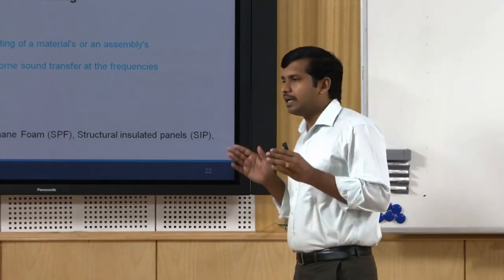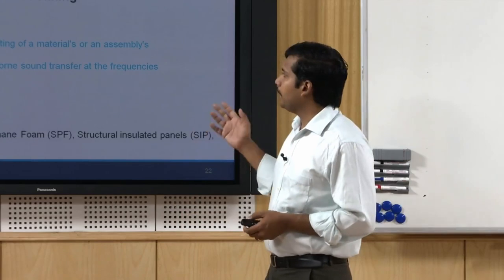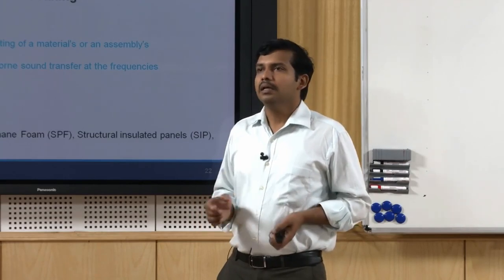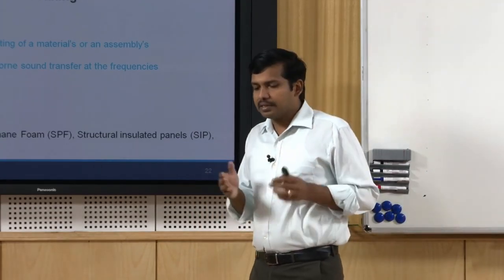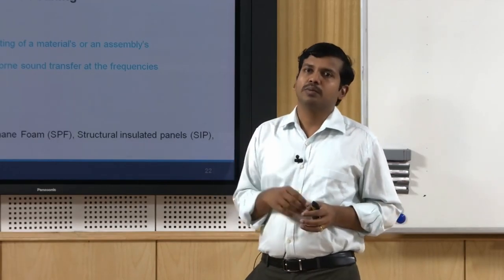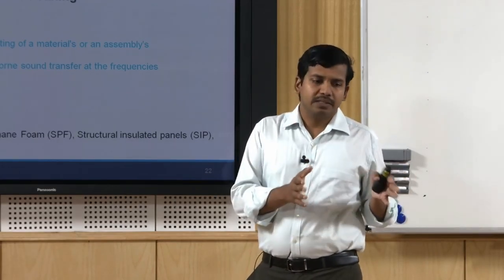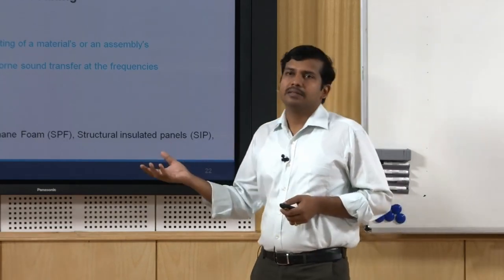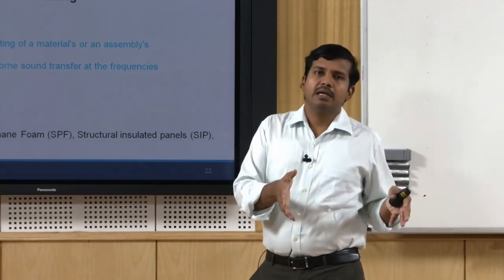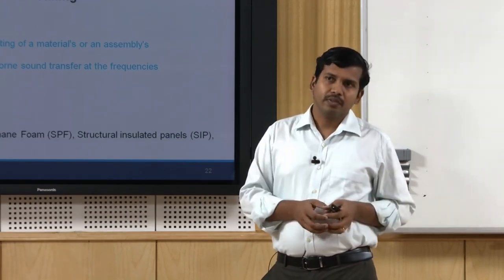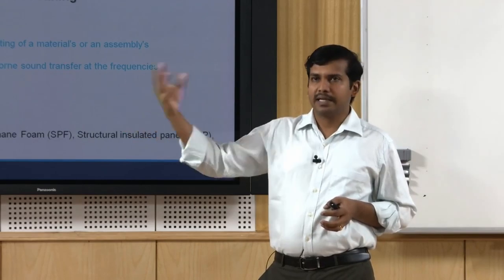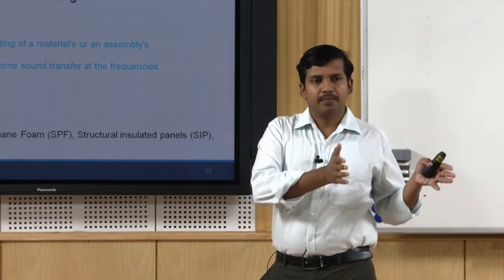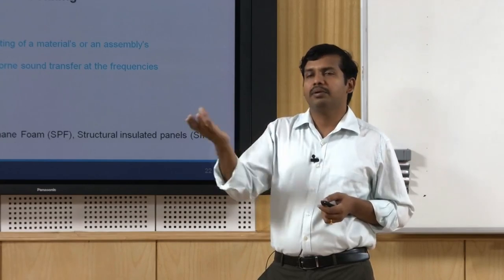For any particular material — a door, a window, or a wall system — there is a standard which asks you to go for a specific STC rating: say 35, 40, or 50. For example, if you are designing a boardroom next to an open plan office, the STC rating of the partition between these two should be, say, 45. If the boardroom requires around 30 to 35 dB background noise, and the open office produces 80 dB, a 50 dB reduction is required, so the sound transmission class must be chosen accordingly.